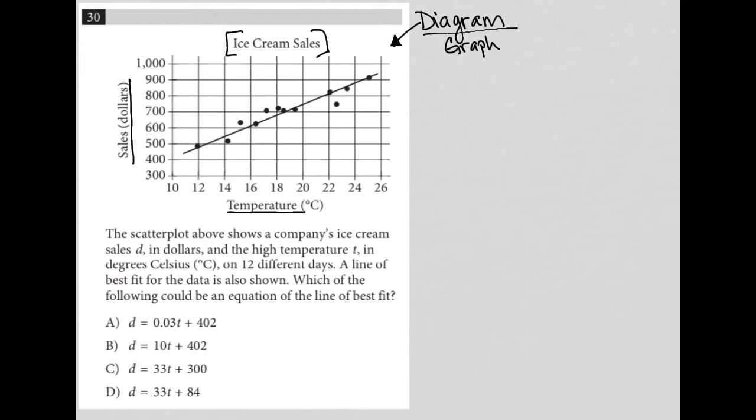So the question says the scatter plot above shows a company's ice cream sales, D, in dollars. So this is actually the D-axis according to the question. And the high temperature T in degrees Celsius. So this is actually like the T-axis according to the graph here.